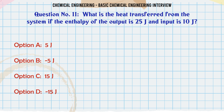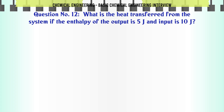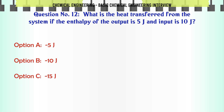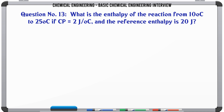What is the heat transferred from the system if the enthalpy of the output is 25 J and input is 10 J? A) 5 J. B) 5 J. C) 15 J. D) 15 J. The correct answer is 15 J.